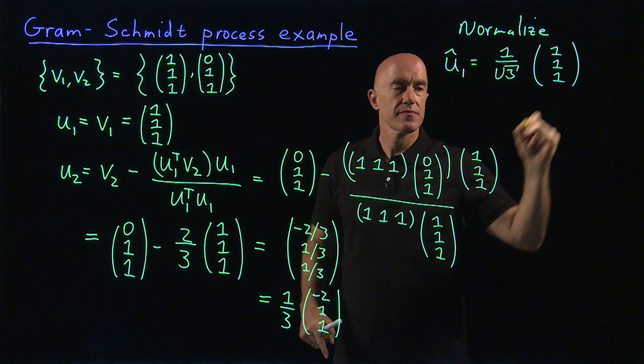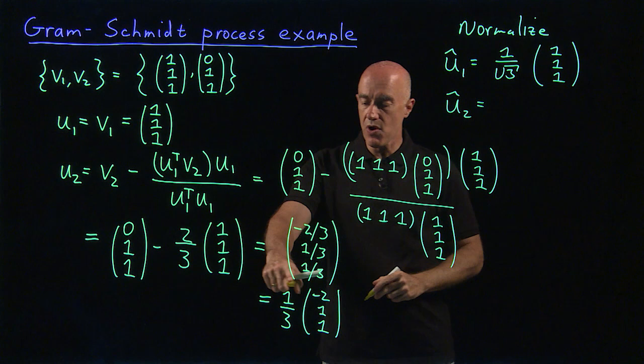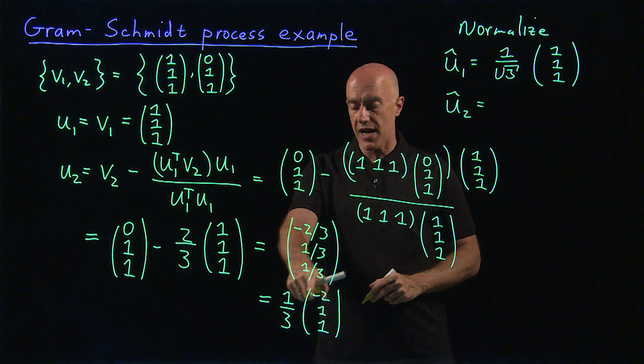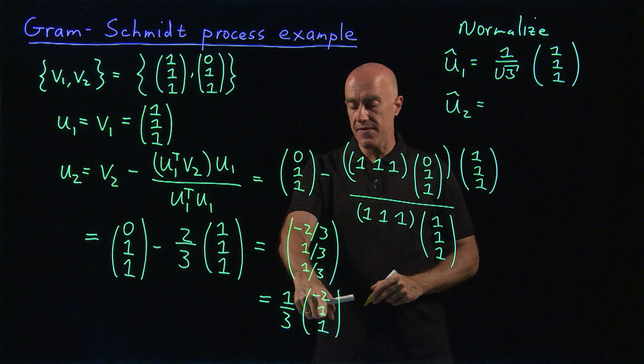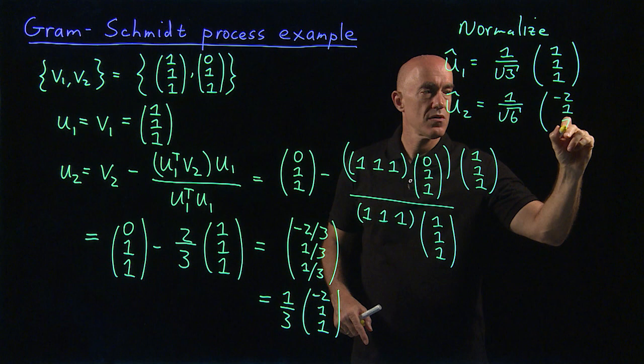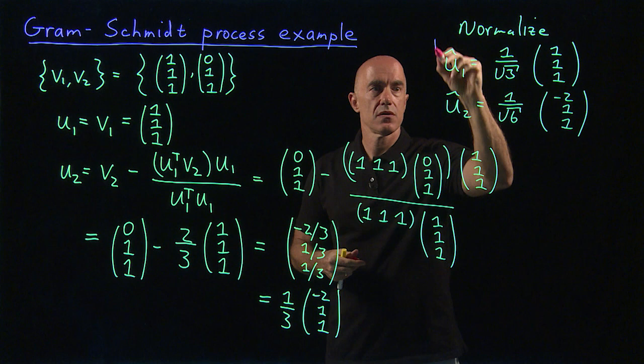And the second vector normalized. We don't have to worry about the 1/3, that's just another constant. So we can just take this vector (-2,1,1). If we take the transpose with itself, the dot product, we get 4 plus 1 plus 1 is 6. We take the square root, so we have 1 over root 6 times (-2,1,1). So that's our orthonormal basis.